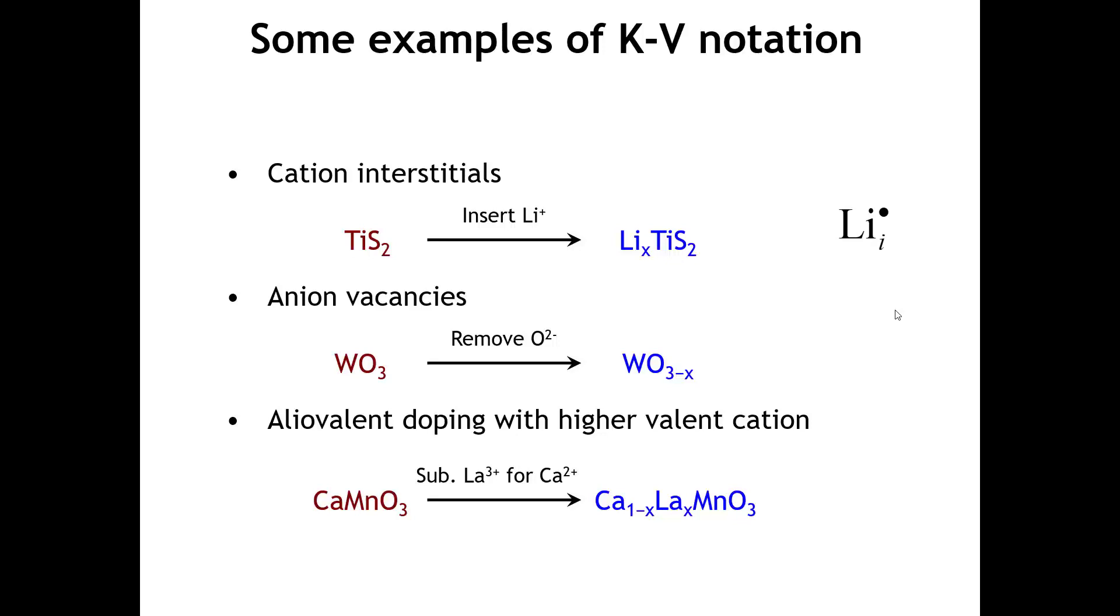If we introduce anion vacancies onto the tungsten trioxide lattice, that's going to be a vacancy. Oxygen is the site where that extrinsic defect is going, and the charge of this one is positive 2 because the oxygen site normally carries a negative 2 charge, and now there's nothing there. With respect to the host lattice, this is a plus 2 defect.